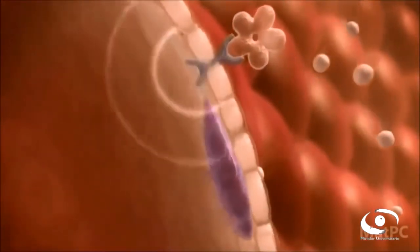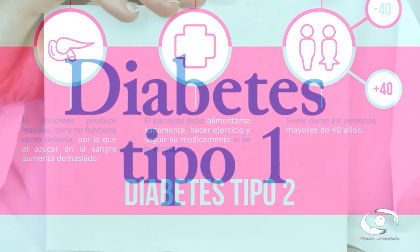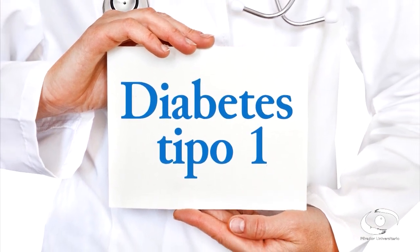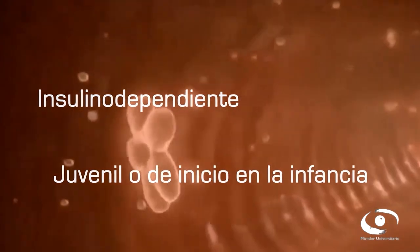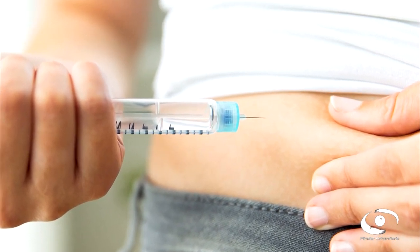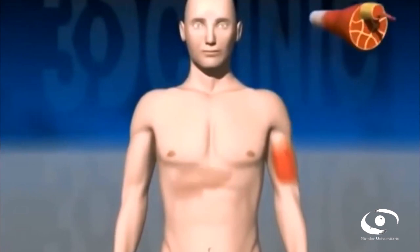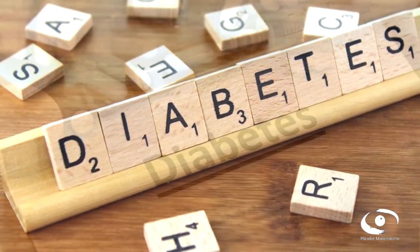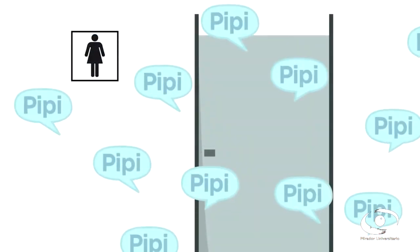Los principales tipos de diabetes son la tipo 1 y tipo 2. La tipo 1 se presenta cuando el cuerpo no produce insulina a causa de un problema de autoinmunidad. También se le conoce como insulino dependiente, juvenil o de inicio en la infancia, por lo que el paciente debe inyectarse la hormona de manera permanente para sobrevivir. Sus causas y las formas de evitarla aún se desconocen. Los síntomas pueden aparecer repentinamente y consisten en excreción excesiva de orina y sed.